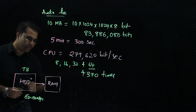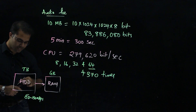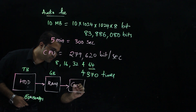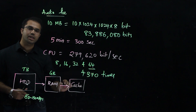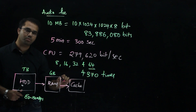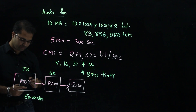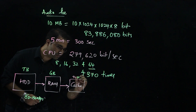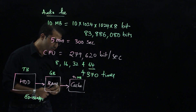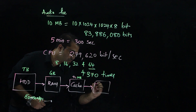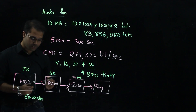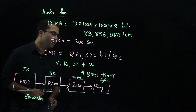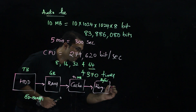The RAM size is in gigabytes. The next section is the cache memory, which is closely associated with the CPU and runs at the CPU's frequency. The cache size is in megabytes. The next section is the registers, and their size is almost in bytes, followed by the CPU.